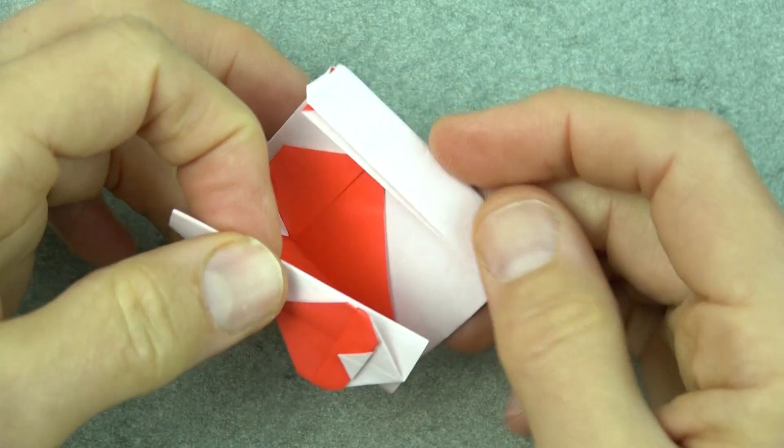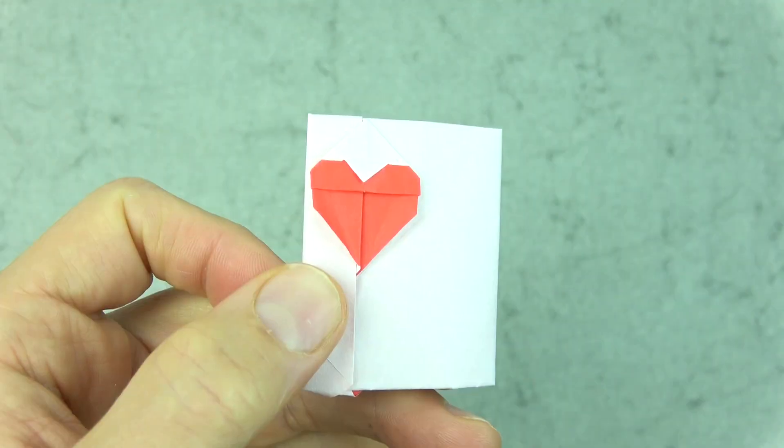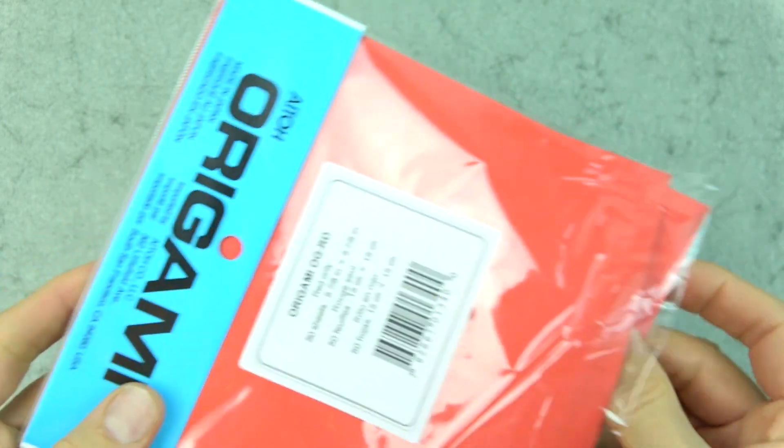Want to learn how to fold it? Ready, set, here goes. For this model, I'm going to use a six inch square of origami paper.